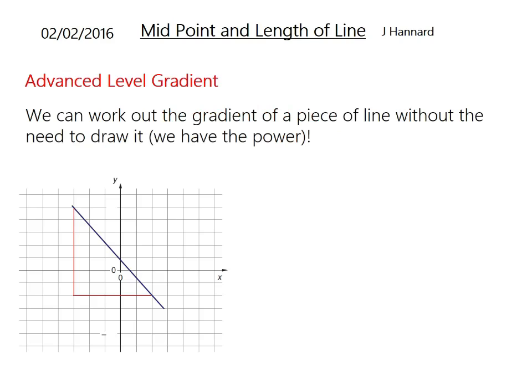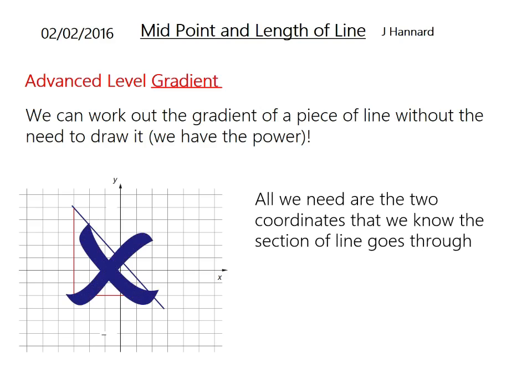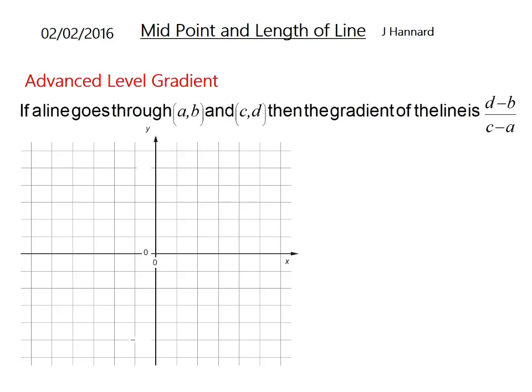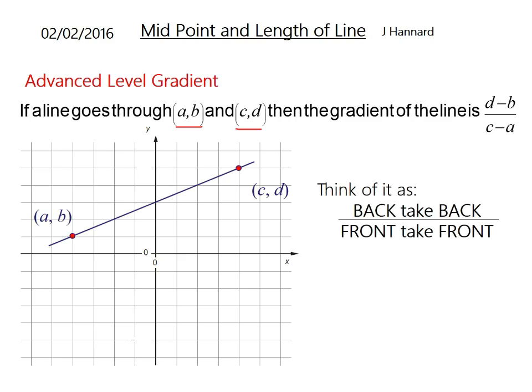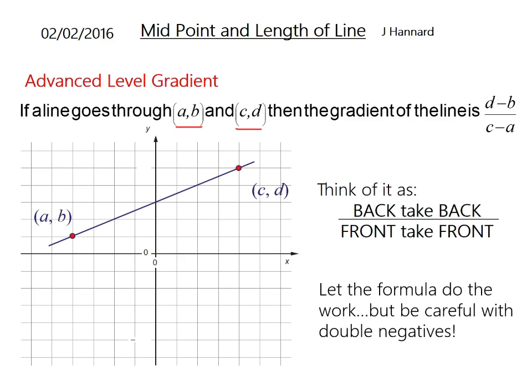Last lesson we did the advanced level gradient and realized we can work out the gradient of a line without actually drawing it. All you need to know is the two coordinates that a line goes through. If a line went through AB and CD, then the gradient is D minus B over C minus A. We like to think of this as back take back over front take front, nice and easy. Just let the formula do the work, but be careful of those double negatives.